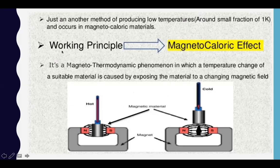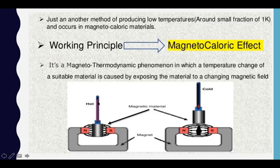The working principle is the magnetocaloric effect — producing heat in the presence of magnets and making it cold in the absence of magnets. You can see in the example: there are two magnets, and the magnetic material placed between them becomes hot. Once you remove it, it becomes cold. This is represented symbolically — red for hot when in the magnetic field, blue for cold when outside it. On the right side, in the absence of a magnetic field, the material is cold. This is the magnetocaloric effect.